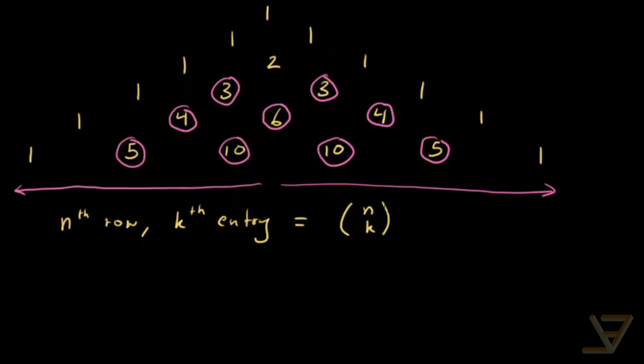So this symmetry would imply that n choose k is equal to n choose n minus k. And we're going to prove that now.